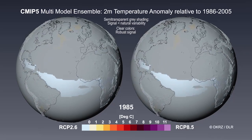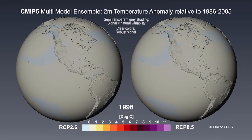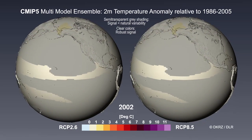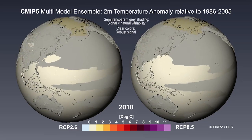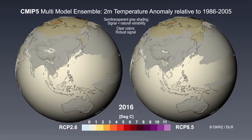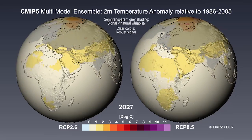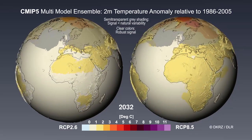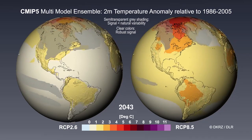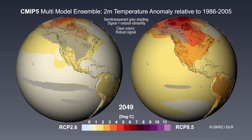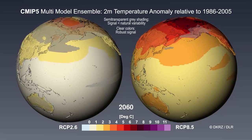Let's look at outcomes of CMIP models. On the spinning globes, we see the temperature difference relative to an average of 1986 to 2005. By using the CMIP multi-model ensemble, we can produce a more robust product. The clear colors show us a robust outcome for the temperature change, while the gray colors indicate areas where the temperature change is smaller than natural variability, so we still have some uncertainty.